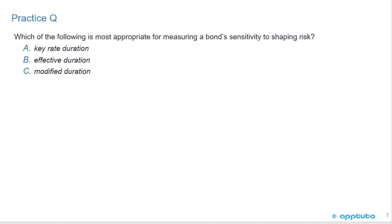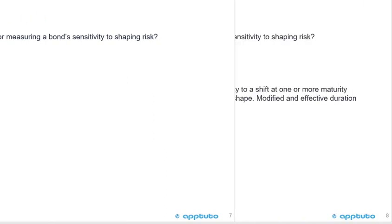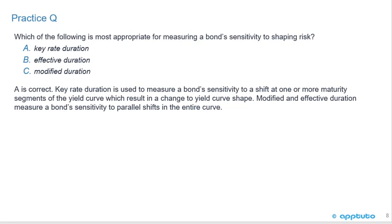Last practice question: which of the following is most appropriate for measuring a bond's sensitivity to shaping risk? A, key rate duration; B, effective duration; or C, modified duration? A is correct. Key rate duration measures a bond's sensitivity to a shift at one or more maturity segments of the yield curve, which results in a change to yield curve shape. Modified and effective duration measure bond sensitivity to parallel shifts in the entire curve. That's the last slide for this LOS. Thank you.